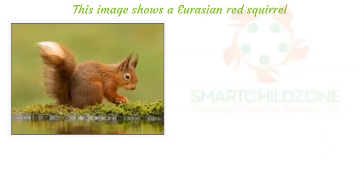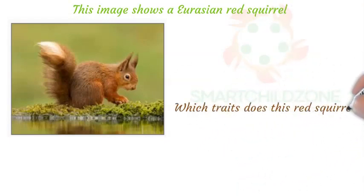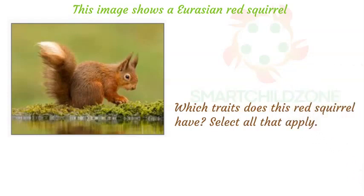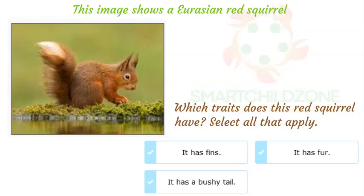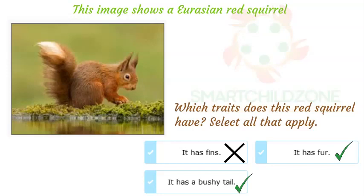This image shows a Eurasian red squirrel. Which traits does this red squirrel have? A trait is the way a living thing looks or acts. Look at the image to see what traits it has. Eurasian red squirrels have legs, not fins — many fish have fins, but squirrels do not. It has fur; they get their name from their reddish fur. It has a bushy tail with a white patch at the tip.